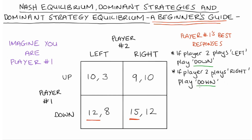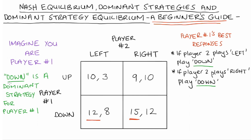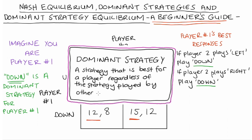There is something special here: the strategy down is a best response for player one regardless of what player two does. This means down is what we call a dominant strategy for player one. A dominant strategy is a strategy that is best for a player regardless of the strategy played by the other players.